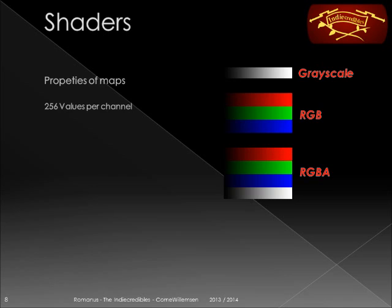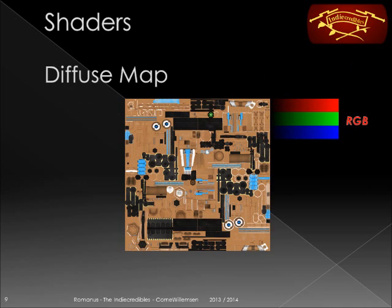Things to know about maps: every channel of a map has 256 values. You can have multiple values per map. One type of map is a grayscale map which holds only one channel. The more common ones, like the diffuse map or the normal map, use an RGB or an RGBA alpha. The alpha can be used for an opacity or transparency map, like a GGA has.